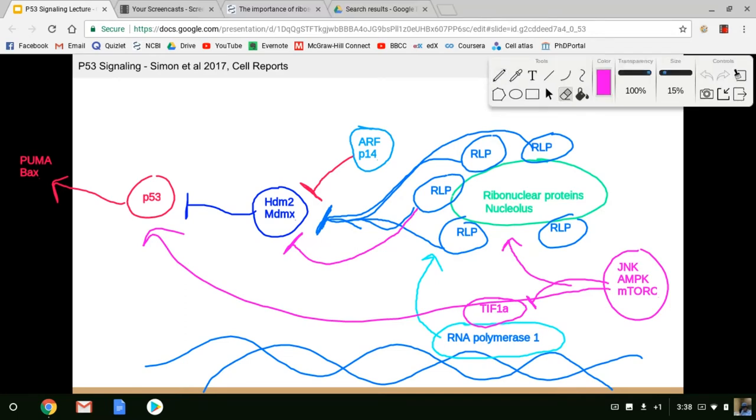Just a really quick correction. mTORC actually activates TIF-1 and rRNA production. Only JNK and AMPK inhibit TIF-1. So instead of including mTORC, we can say the loss of mTORC inactivates TIF-1. Another important player that I forgot to mention is SIRT-1. SIRT-1 is the NAD-dependent deacetylase that can inhibit TIF-1 as well by deacetylating it. So you might notice that JNK, AMPK, and SIRT-1 are all stress-activated kinases. AMPK and SIRT-1 are both activated during starvation. So perhaps prolonged starvation or JNK signaling can lead to the loss of rRNA and the dissolution of the nucleolus and the stabilization of p53.